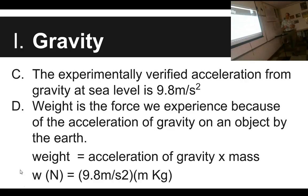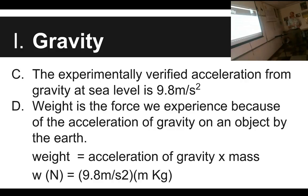We have a number for how hard the acceleration of gravity is. Gravity accelerates all objects towards the center of the Earth with an acceleration of 9.8 meters per second squared. When you are only being accelerated by gravity — like the bottle as it falls — it is accelerating towards the center of the Earth at 9.8 meters per second squared.